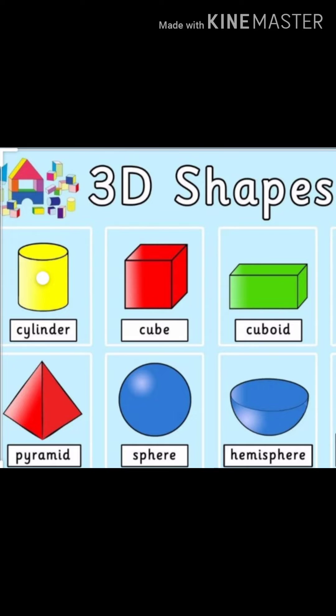I will tell you some examples of 3D shapes. Those are sphere, cube, and cuboid. Now I am going to explain about the 3D shape cube. Look at this picture. Cube is a 3D shape.